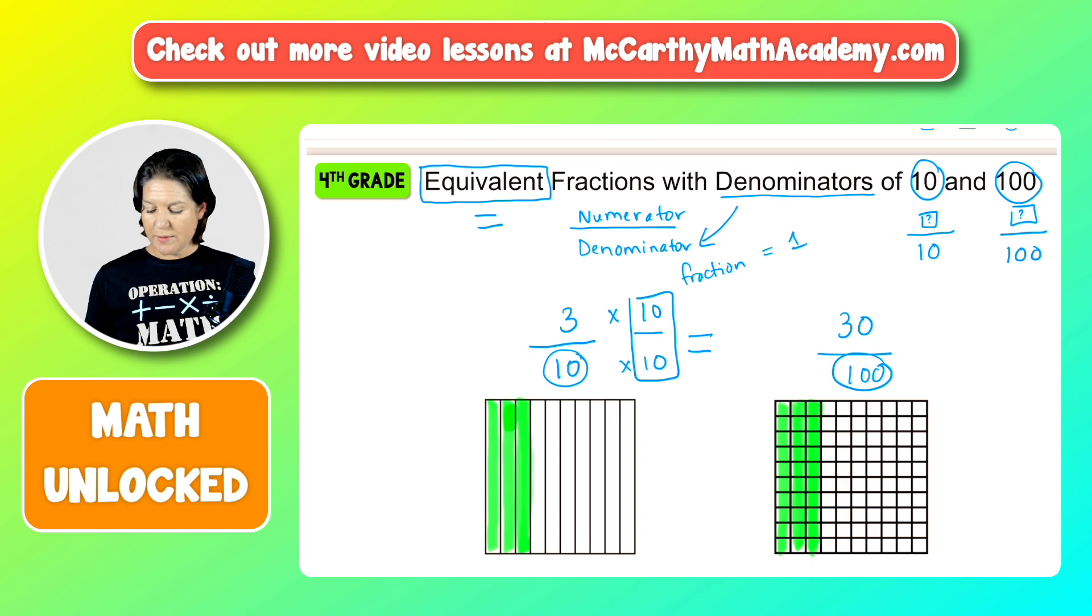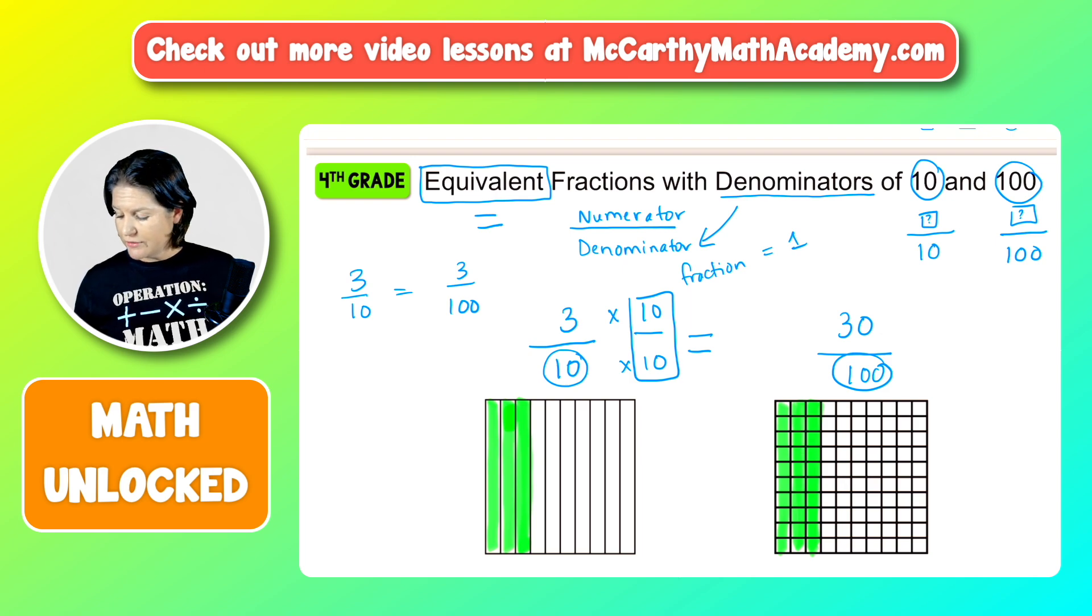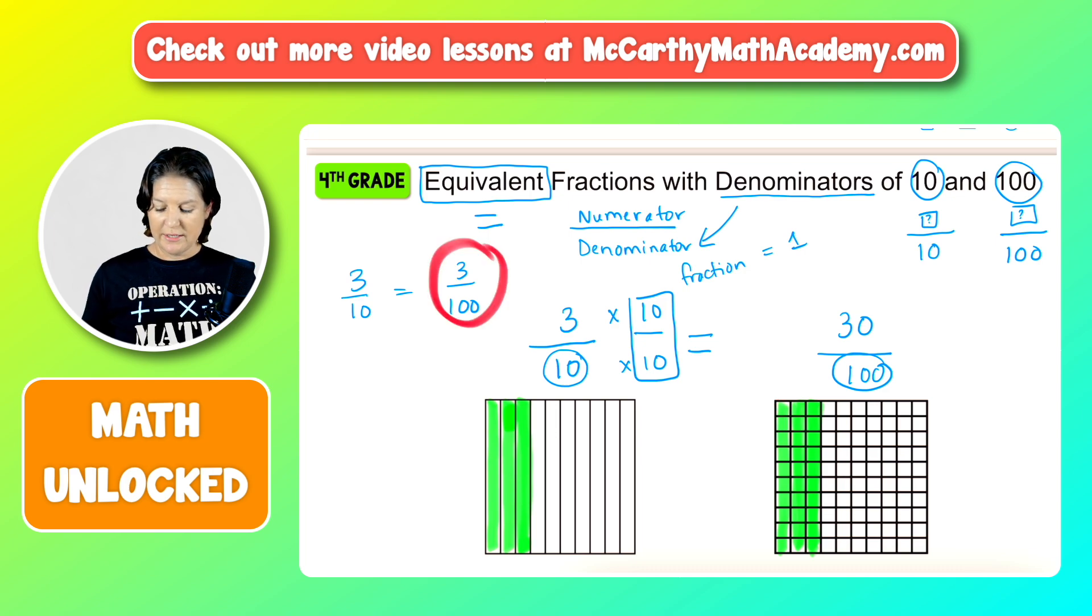What is a common mistake that some students might make? Well, they might say that three tenths is equal to three hundredths. And now, according to our visual, we know that that's not true because if I were to shade in three hundredths, I would only be shading in this little piece right there. One, two, three of those hundredths. And those would not be equivalent fractions there. So that's a great discussion to have if students are writing something like this, to have a discussion of what's happening with your fractions and your visuals.